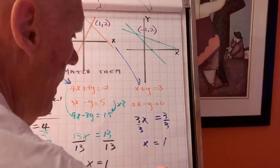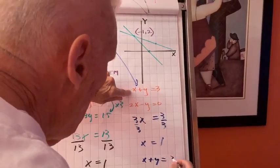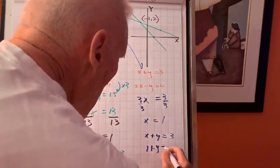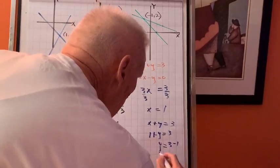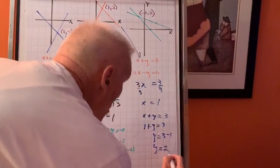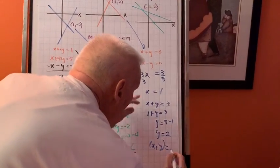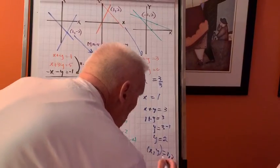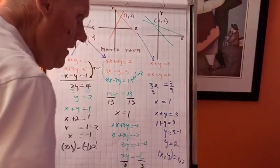Go back and put it in. X plus y is 3. 1 plus y is 3. Transpose the 1. Y is 2. So the pair x, y is 1, 2. That's over here. They go together. Thank you.